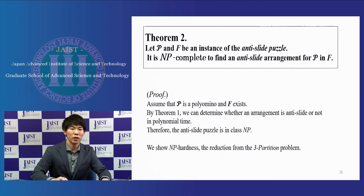Theorem 2. Let P and F be an instance of anti-slide puzzle. It is NP-complete to find an anti-slide arrangement for P in F. Proof. The anti-slide puzzle is in class NP, using by the statement of Theorem 1. We showed the NP-hardness reduction from the 3-partition problem.